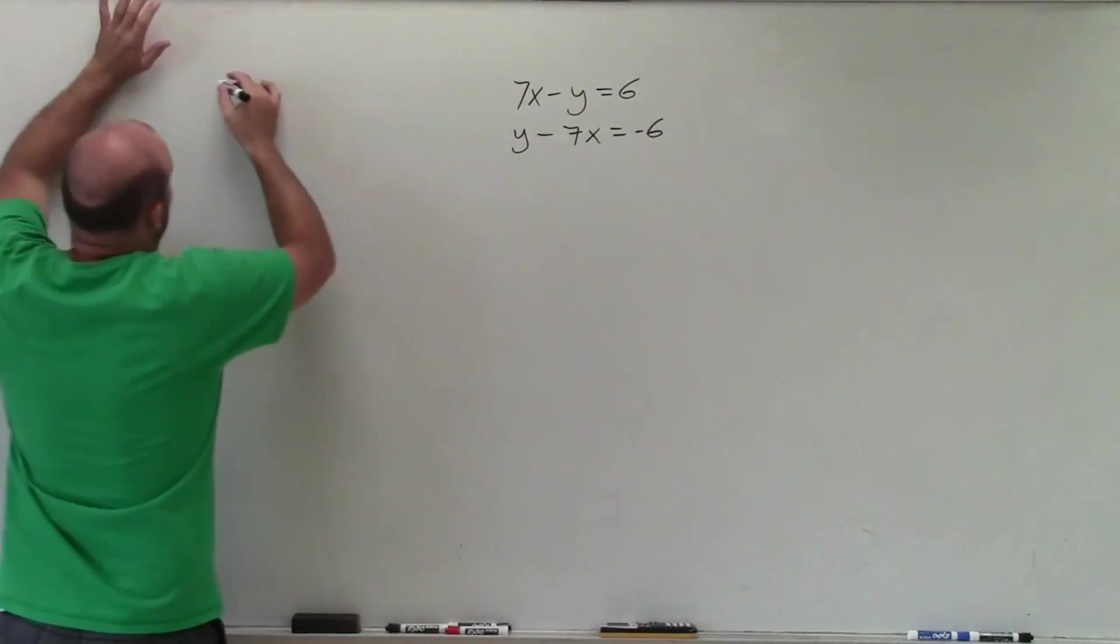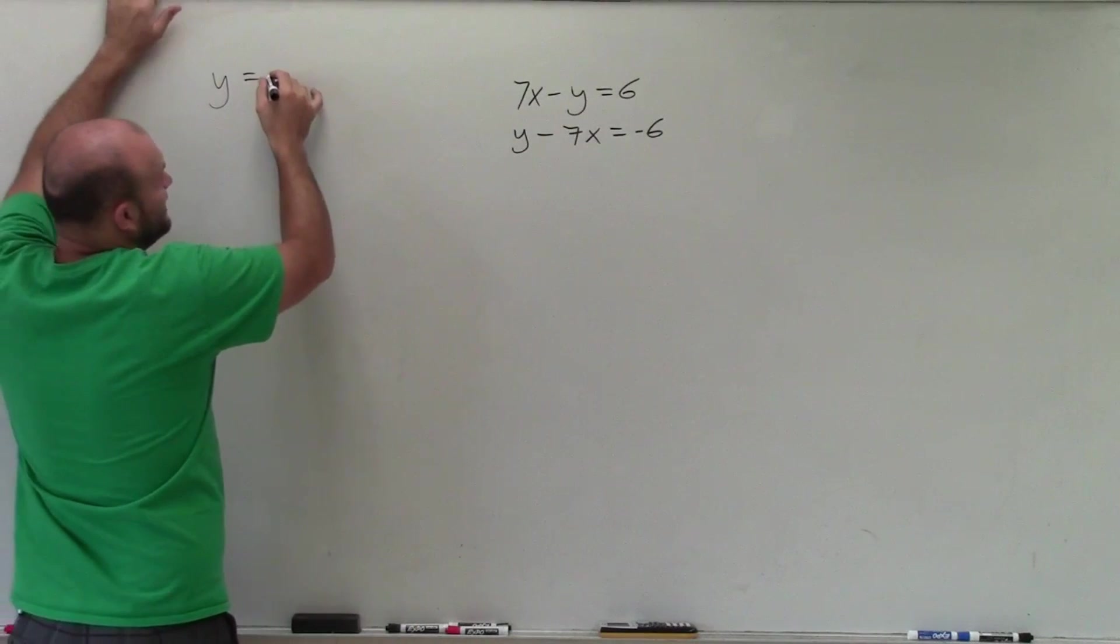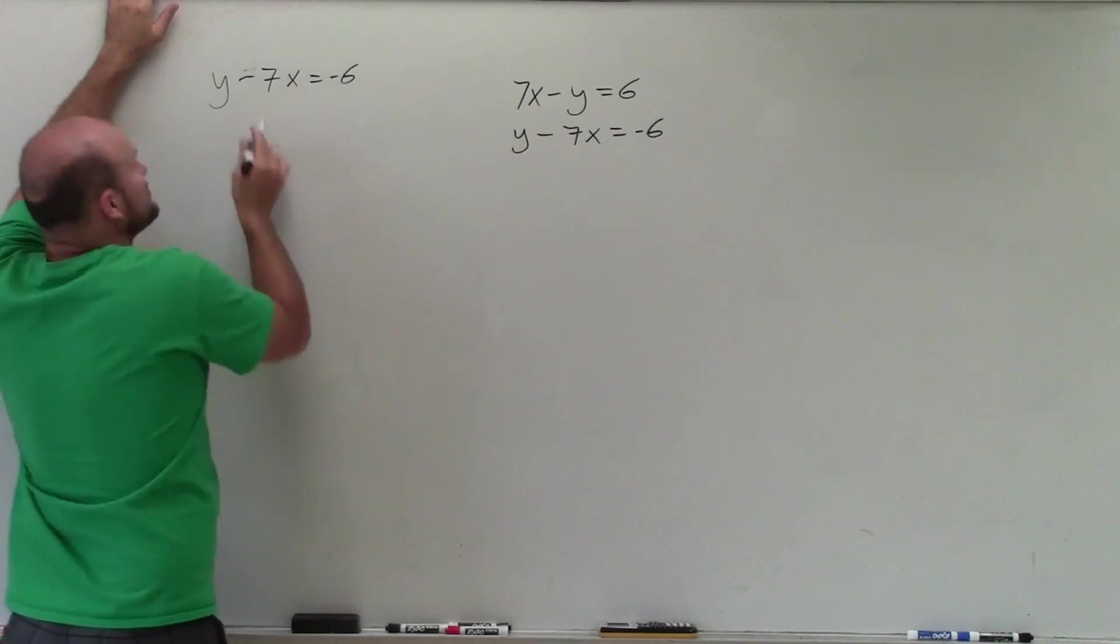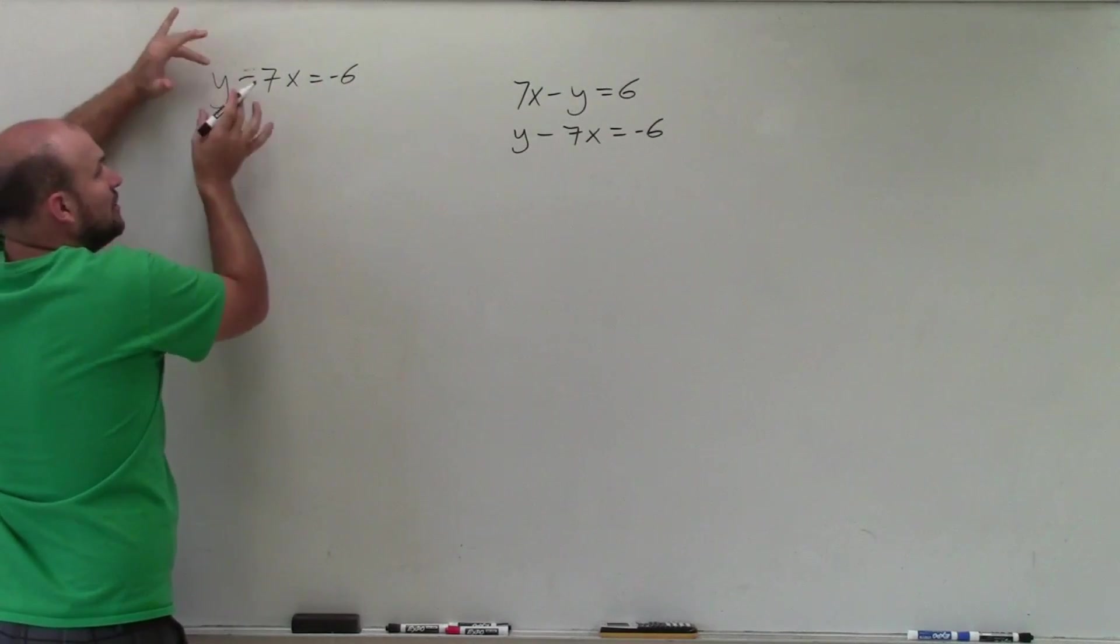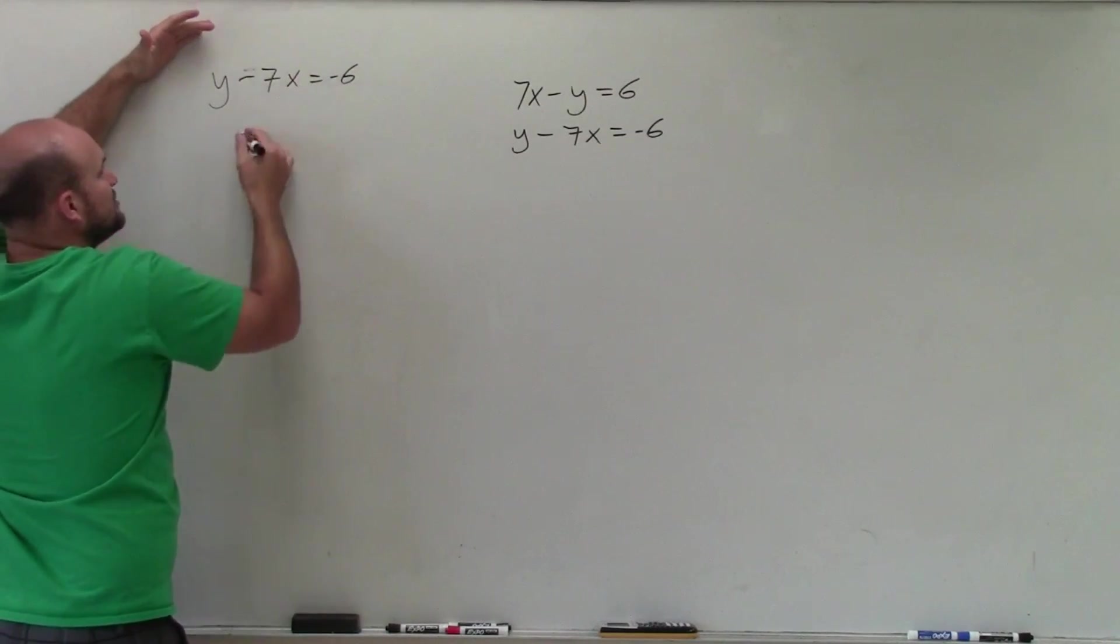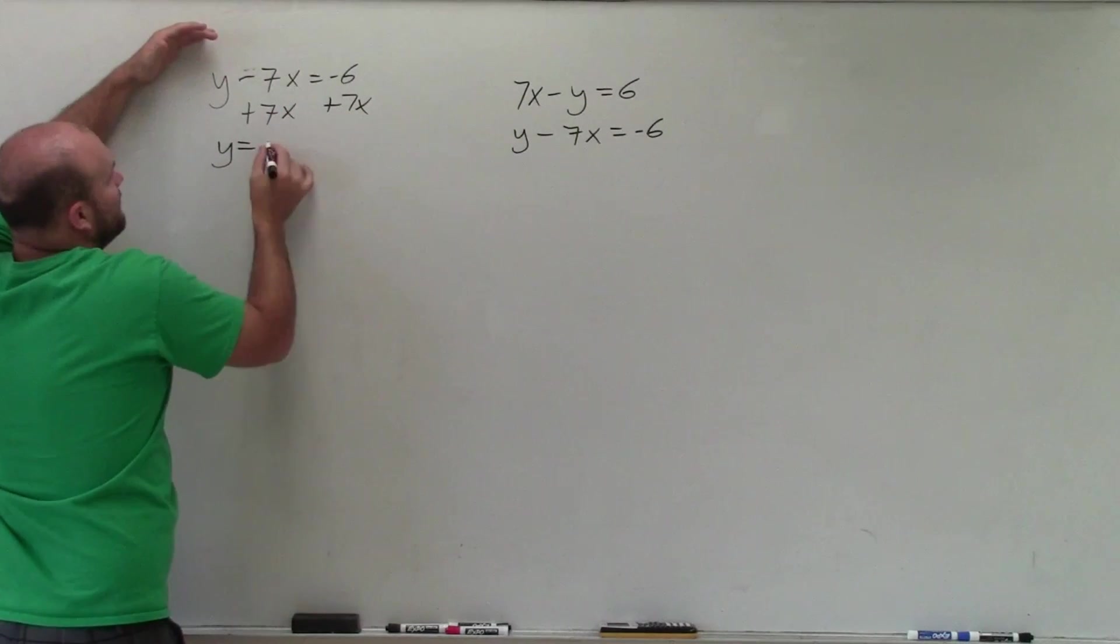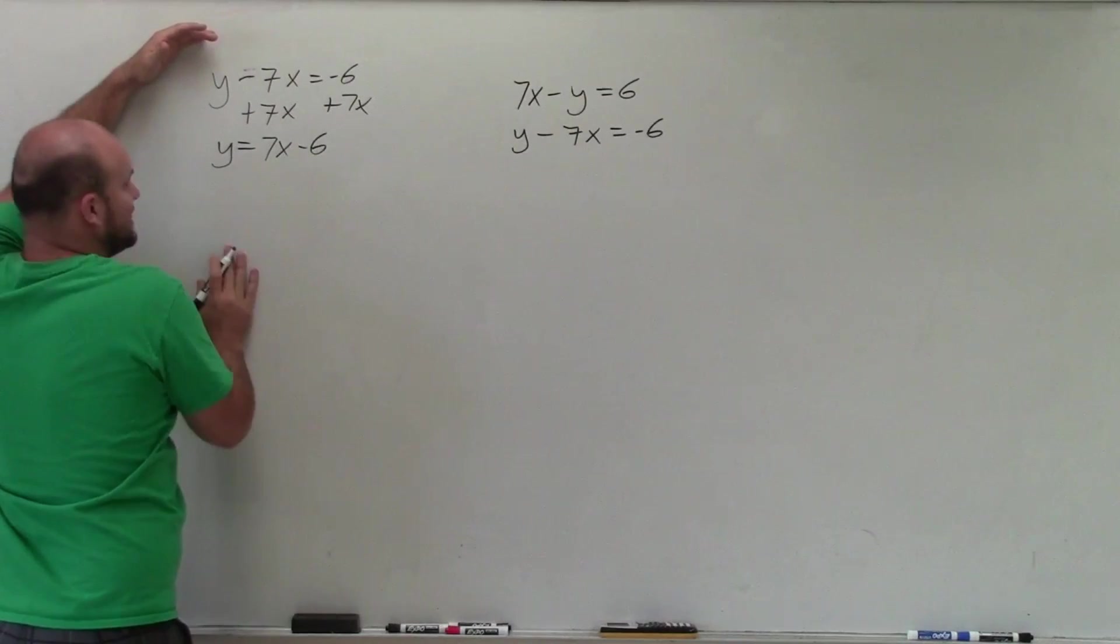So what I'm going to want to do is solve for y in this equation. So I have y minus 7x equals negative 6. So I want to isolate this variable. I want to get the variable by itself. So to do that, I have to undo subtraction, which would be adding 7x to both sides. So I have y equals 7x minus 6.